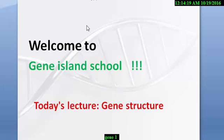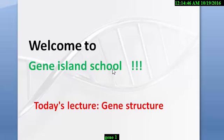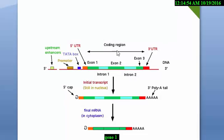Hello friends, welcome to my channel Gene Allen School. Here we will learn about basic genetic engineering, biotechnology, and molecular biology. Our today's lesson is gene structure. In gene structure, we find the promoter region, enhancer, TATA box, start codon, stop codon, UTR 3' or 5' UTR, and the basic elements of transcription, translation, etc.